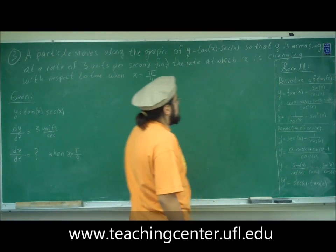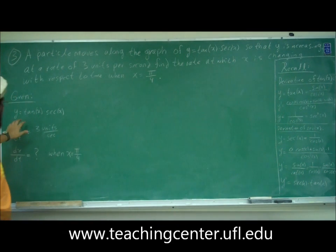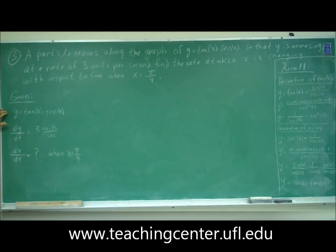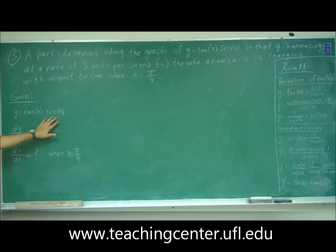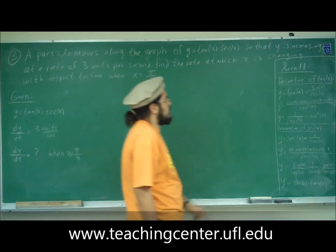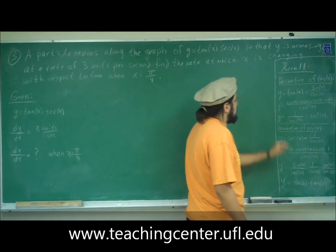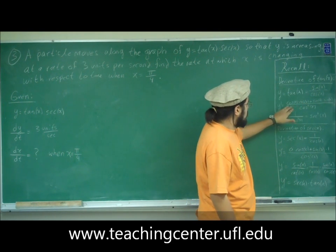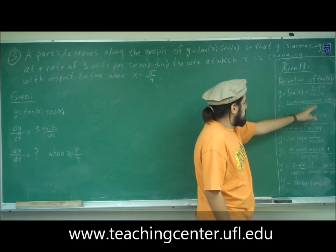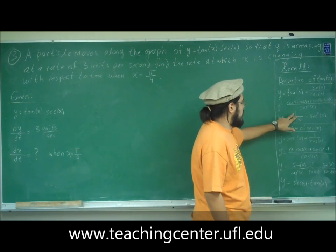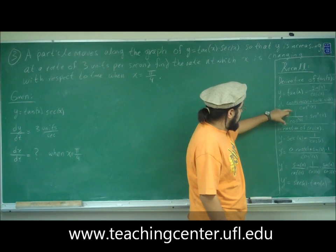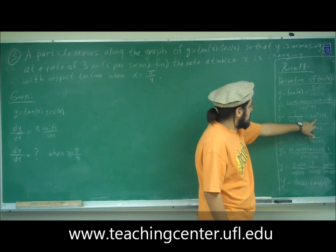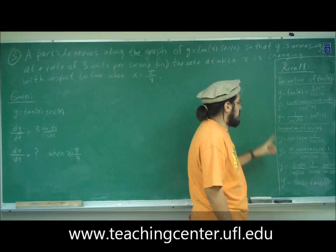Now recall, since we need to take the derivative of both sides with respect to t, we need to know the derivatives of tangent and secant. The derivative of tangent of x: we know tangent of x is sine over cosine. Using the quotient rule, after simplification, cosine squared plus sine squared equals 1 by the Pythagorean identity, so we get 1 over cosine squared, which is secant squared. So the derivative of tangent is secant squared.